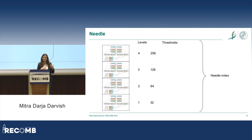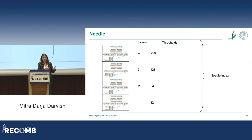In practice we use around 15 levels. In this example, all k-mers or minimizers with a count value between 32 and 64 are stored on the first level, and those between 64 and 128 on the next level.